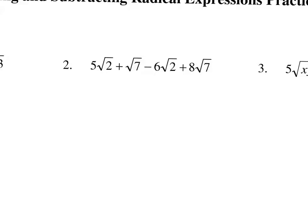On number two we're going to look for the like radicands. These two terms with the square root of 2 are like and we can put those together by adding 5 and negative 6, which makes negative 1 square root of 2 — the 1 is implied. These square roots of 7 are also like. This term has an invisible 1 in front of it, so I'm going to add the 1 and the 8 to make 9 square root of 7.